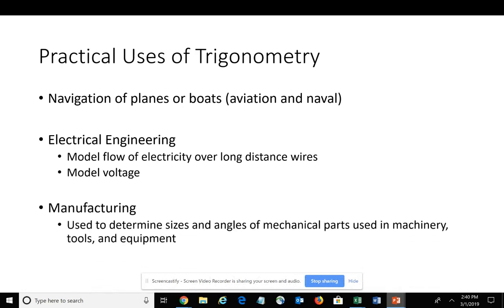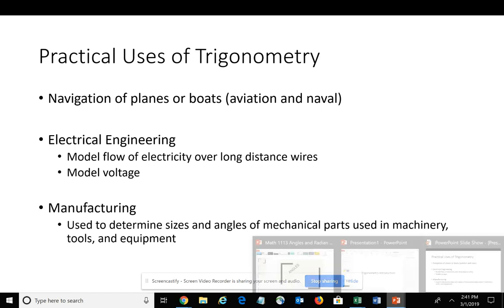Also within engineering with manufacturing, mechanical engineers use trigonometry to determine the sizes and angles that mechanical parts fit together, whether you're making a pair of scissors or a car. Trigonometry is used to help determine the angles and sizes of those different tools and equipment.